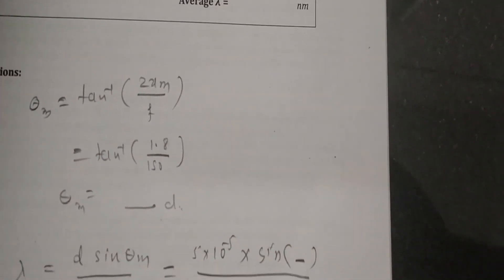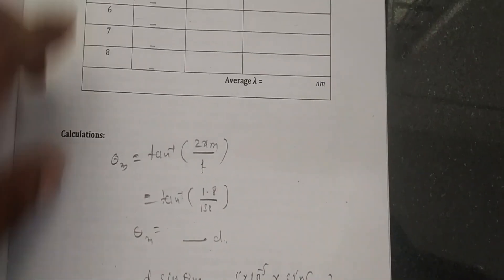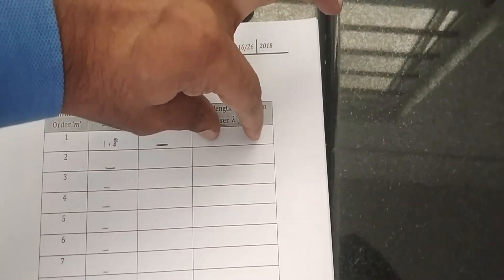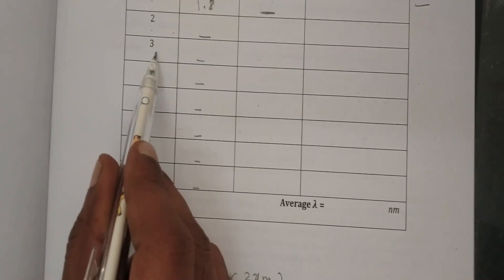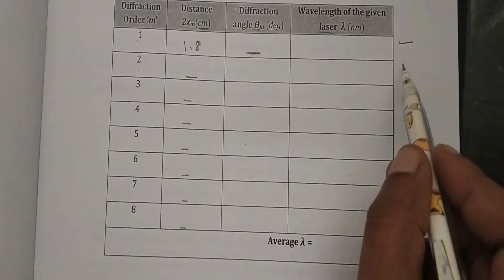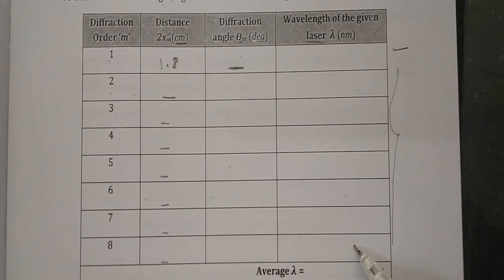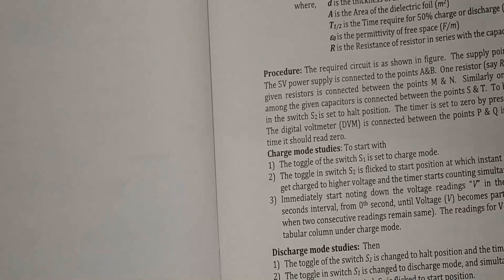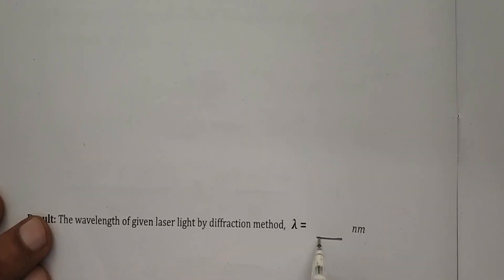For each order m — substitute m = 1 for first order, m = 2 for second order, and so on — calculate lambda and express it in nanometers. Repeat for all orders, tabulate all the wavelength values, take their average, and record this average as the final result: the wavelength of the given laser light determined by the diffraction method.